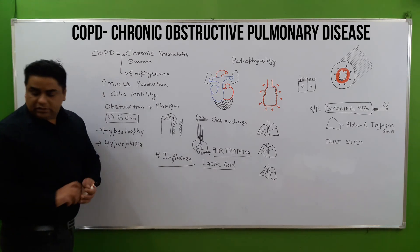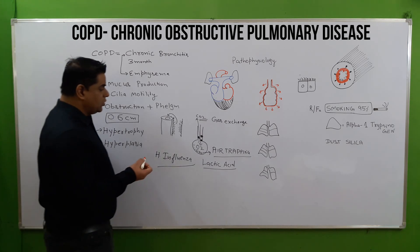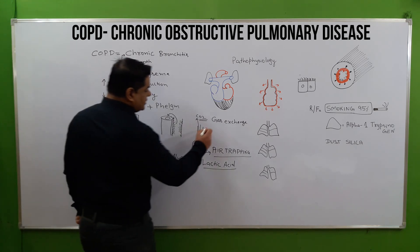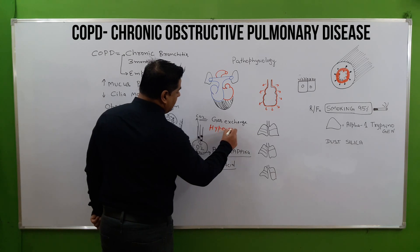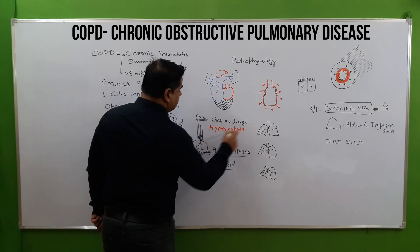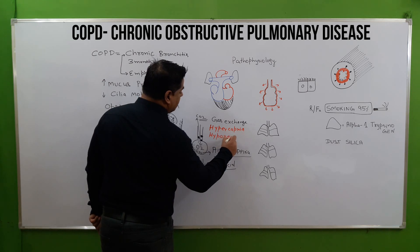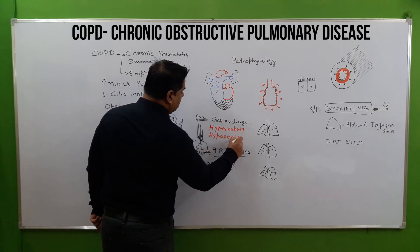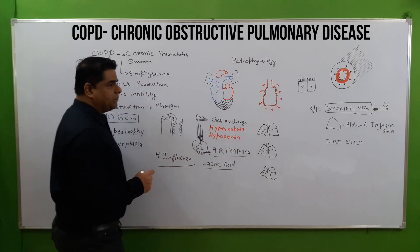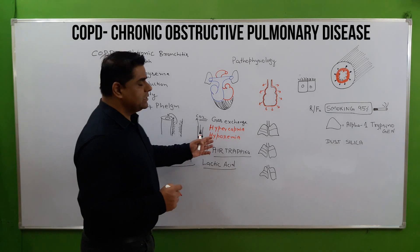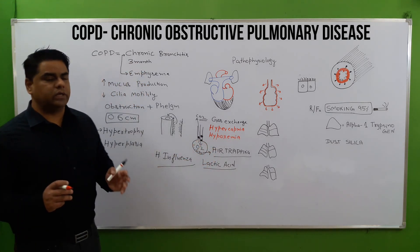Whenever there is accumulation of CO2, it causes hypercapnia. Then there is hypoxemia, which can also be present. And hyperemia — meaning increased blood circulation to a particular area — can also occur.